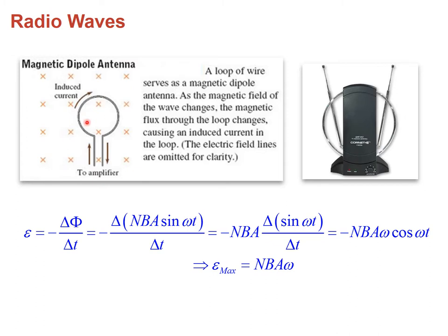The flux is given by the field times the area and the sine of the angle, which oscillates as a function of time. This variation gives the EMF being produced. The maximum EMF is given by: EMF_max = N × B × A × ω, where N is the number of turns of the coil, B is the field, A is the area, and ω is the angular frequency — the number of oscillations per unit time times 2π.